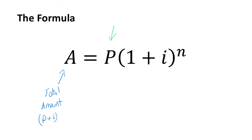P is going to be your principal amount — how much you're starting with at the beginning of the investment.